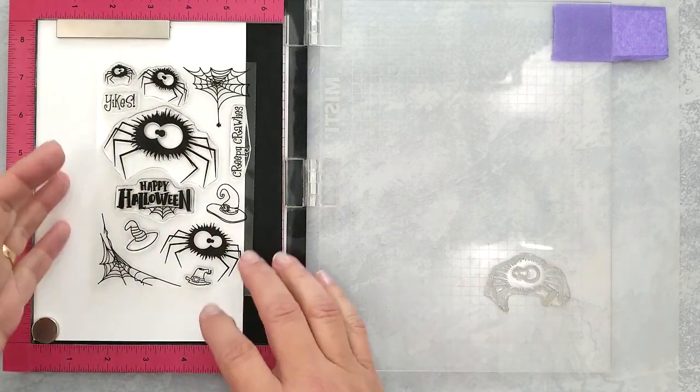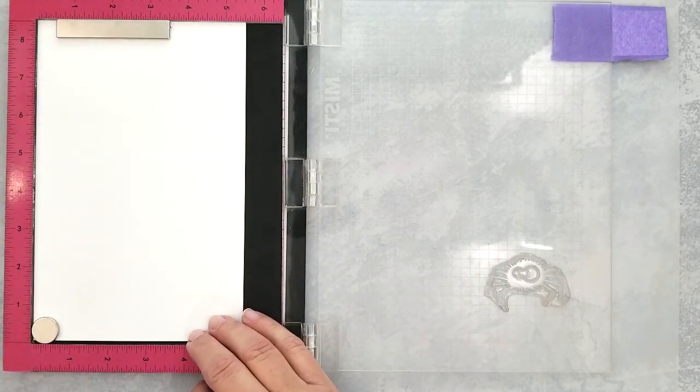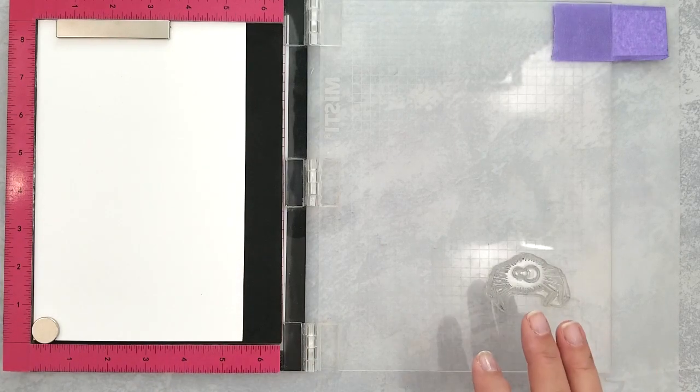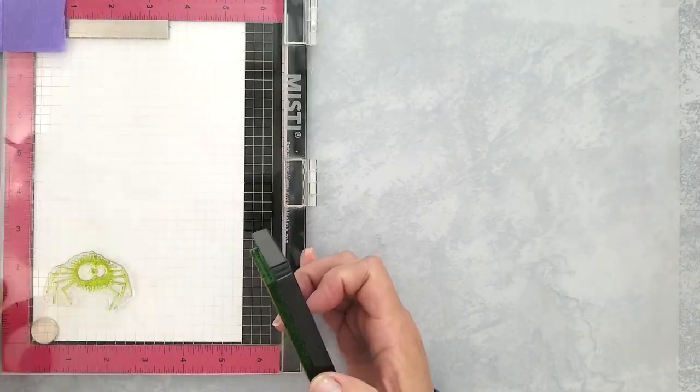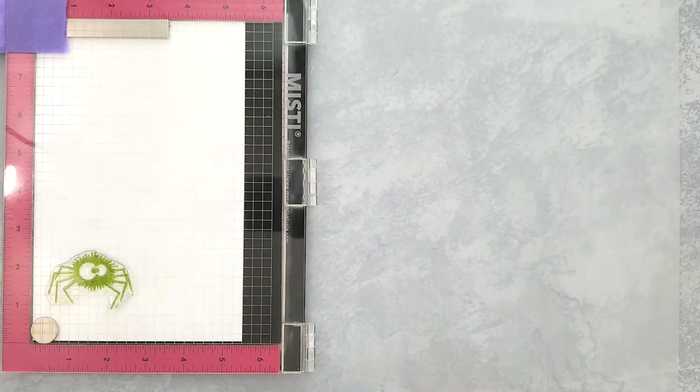I placed a piece of 80 pound cardstock into my MISTI and I'm going to stamp the medium sized spider in bright colors. I'm using lime green, ultra pink, orange slush, grape juice, and Audrey blue.